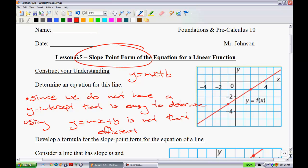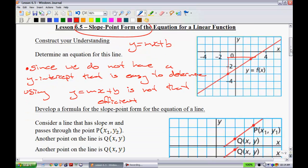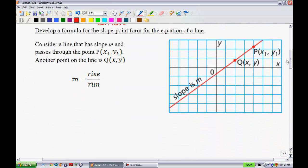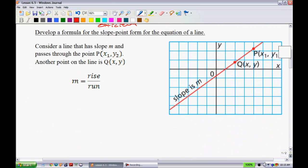All right, and so here comes the slope point form of the line. So notice here how we can find the slope really easy and we do have a point that's on that graph. Well, that's where we're going to use this different method. All right, so let's try and develop a formula for the slope point form for the equation of the line.